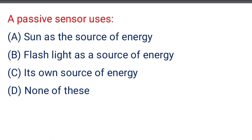Next question: a passive sensor uses — option A: sun as the source of energy, option B: flash light as the source of energy, option C: its own source of energy, option D: none of the above. The correct answer is option A: sun as the source of energy.